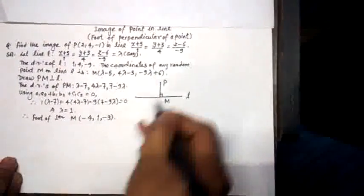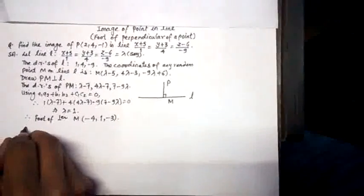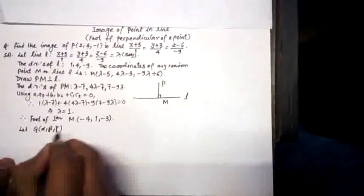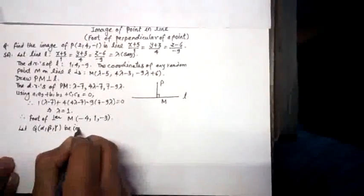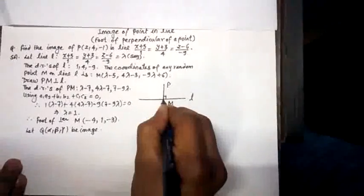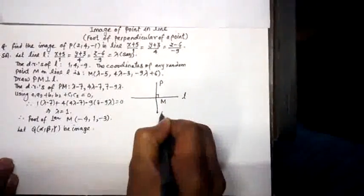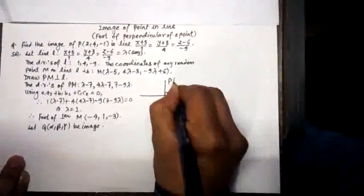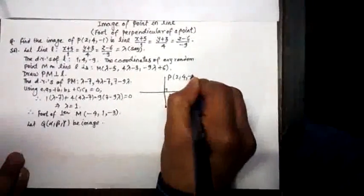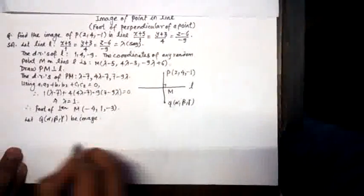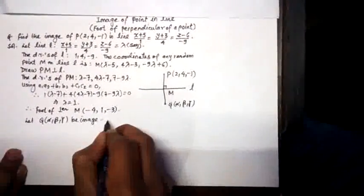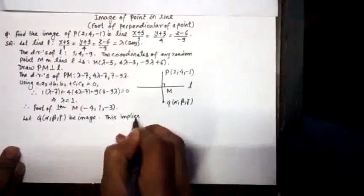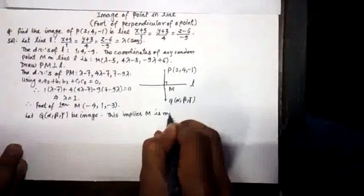Now, for finding the image of the point P in the line L, we will take let Q(α, β, γ) be the image. So here we take the image Q and the point is (α, β, γ). We can mark the point P as (2, 4, -1) as given in the question. Now it is evident, this implies that M is the midpoint of PQ.